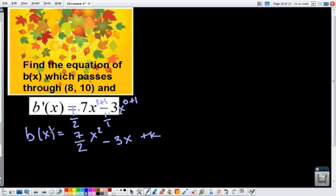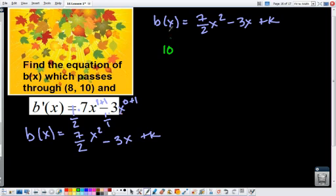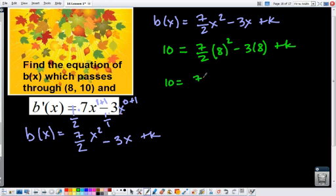All right, so now I'm basically, I'm going to rewrite this up here so we have more room. You know I love fractions, so I'm going to use 7 halves as a fraction instead of a decimal. All right, so now all I'm going to do is I'm going to take the point that exists on the original function b of x, and I'm going to plug it in for x, and in this case b of x, or you could say y. So 10 equals 7 halves times 8 squared minus 3 times 8 plus k. Wow, I've chosen some wonderful numbers, didn't I? So 7 halves times 64 over 1 minus 24 plus k.